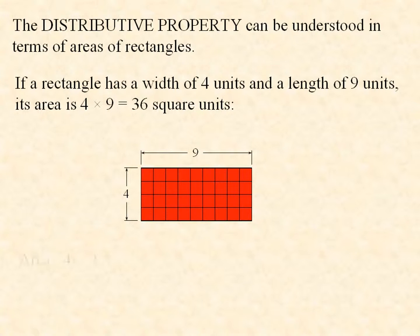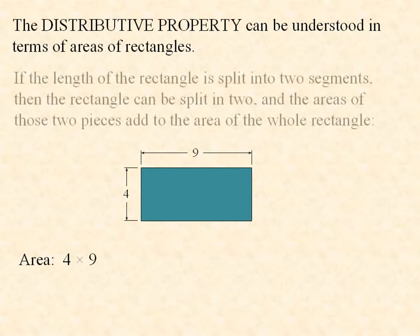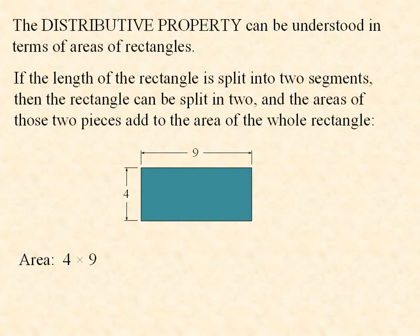The area is 4 times 9 square units because we have 4 rows of 9 little squares per row. If the length of the rectangle is split into two segments, then the rectangle can be split in two and the areas of those two pieces add to the area of the whole rectangle.